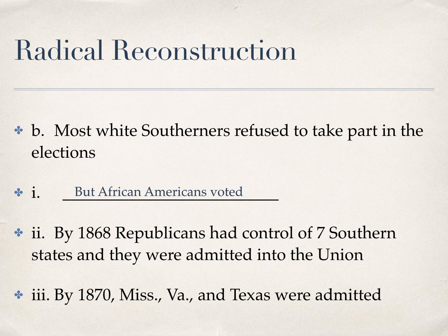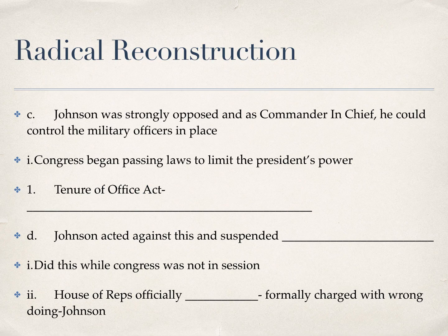By 1870, Mississippi, Virginia, and Texas were also admitted, so all 10 states under the Radical Reconstruction Act had been admitted into the Union. Johnson had lost all his power and was strongly opposed by Congress. But as commander in chief, he could still control military officers, so Congress started passing laws to try and limit Johnson's power.